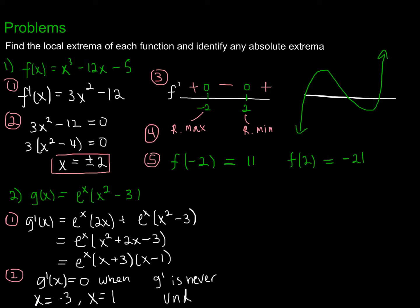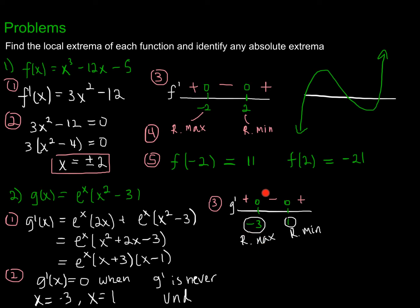Constructing the sign chart with critical points at x = −3 and x = 1: substituting a value to the left of −3 gives a positive derivative; substituting 0 in between gives a negative derivative; substituting a value to the right of 1 gives a positive derivative. By the first derivative test, the function goes from increasing to decreasing at x = −3, so that's a relative maximum. It goes from decreasing to increasing at x = 1, so that's a relative minimum. Now I'll find the exact values and check for any absolute extrema.